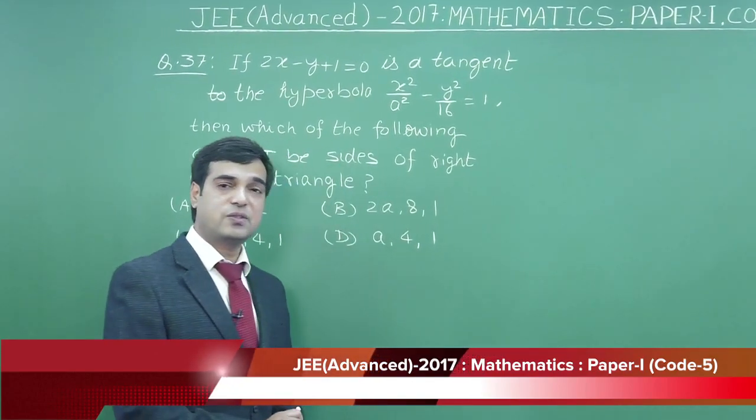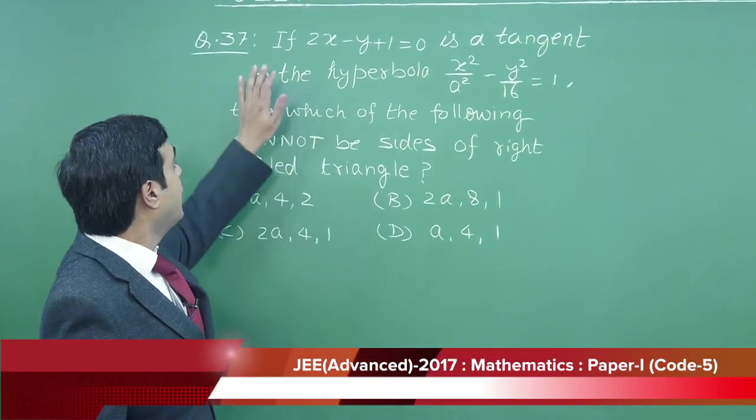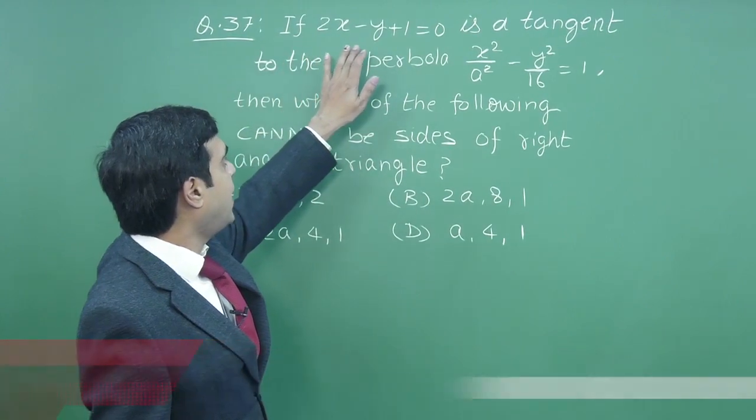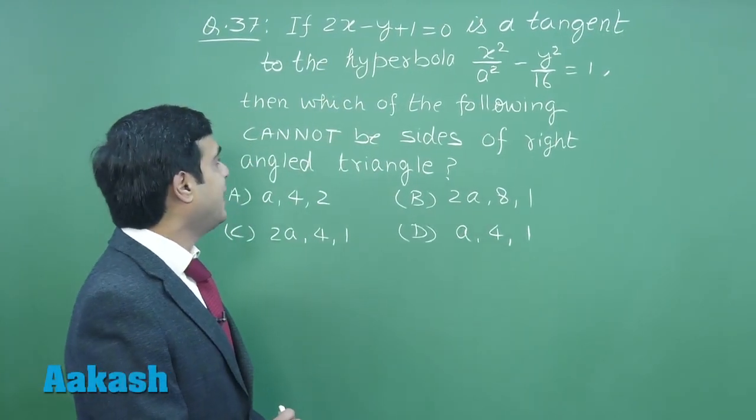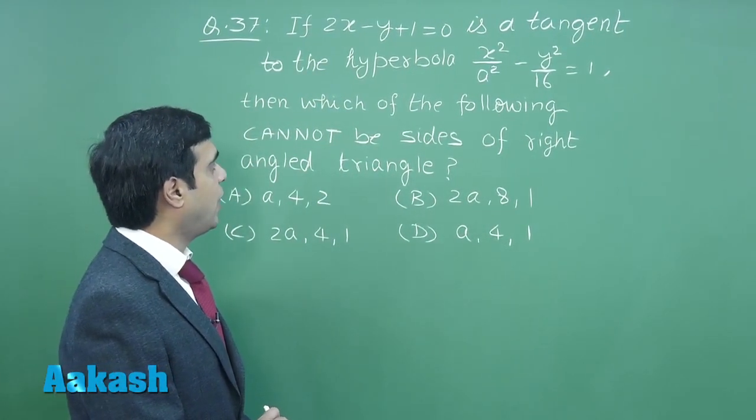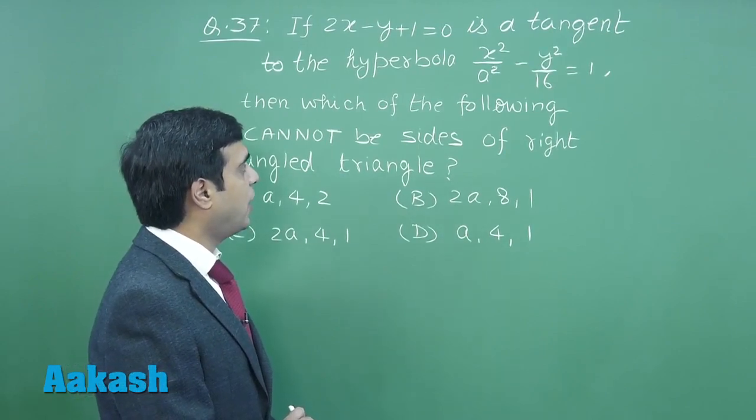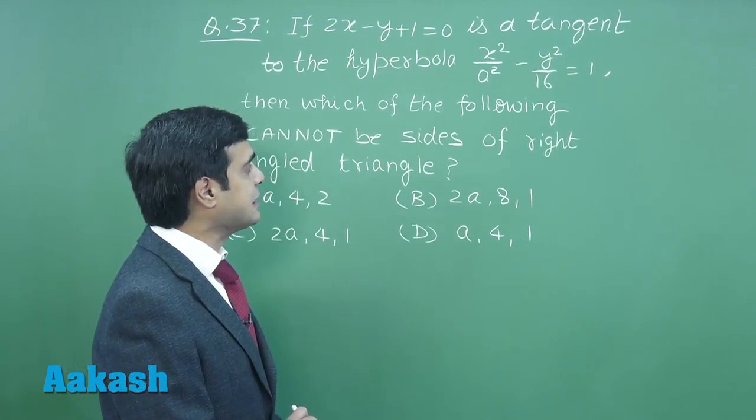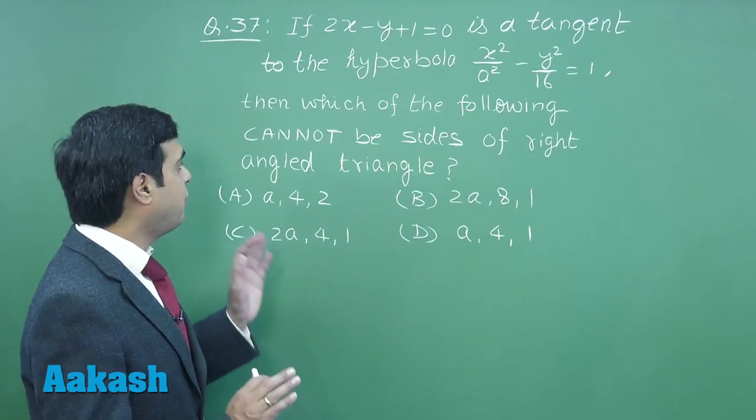Let's start with the first question, that is question number 37. If 2x - y + 1 = 0 is a tangent to the hyperbola x²/a² - y²/16 = 1, then which of the following cannot be the sides of a right-angled triangle?